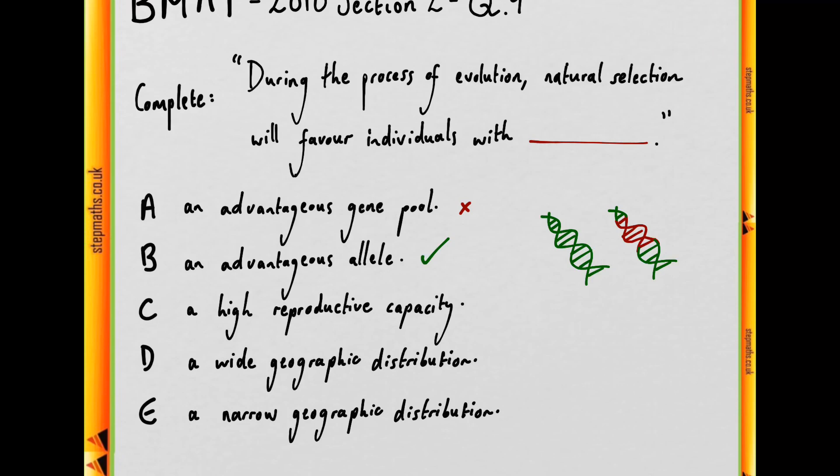Let's go through the rest of them though. In the case of C, does natural selection favor individuals with a high reproductive capacity? Well, we know this to be wrong because it's not the case that, for instance,